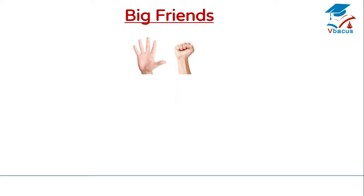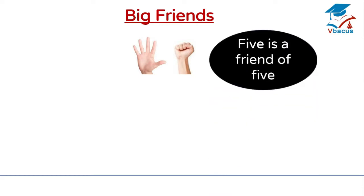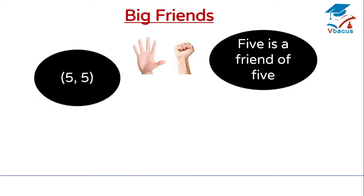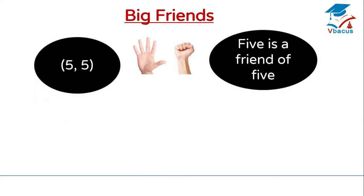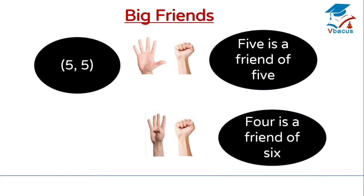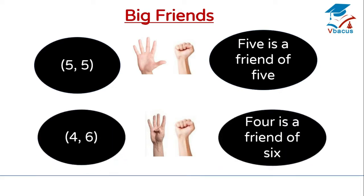How many fingers are open? 5. So 5 is a friend of 5. We can write it as 5, 5. Let us see next. How many fingers are closed? 6. How many fingers are open? 4. So 4 is a friend of 6. We can write it as 4, 6.